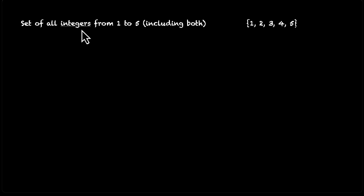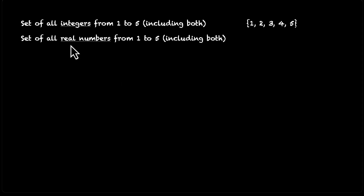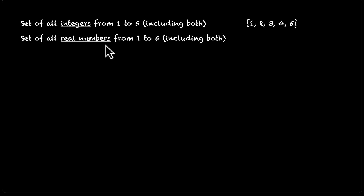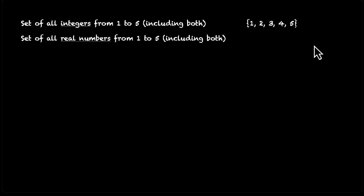This is the set of all integers. But how do you do this one? How do you write the set of all real numbers from 1 to 5 including both? Recall that real numbers are not just integers — they're everything in between as well: all rational numbers and irrational numbers. So we have infinite numbers between 1 and 5 that are real numbers. How do you start writing them down?